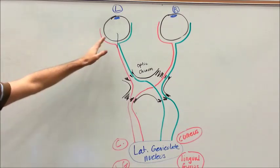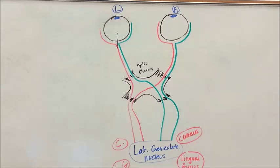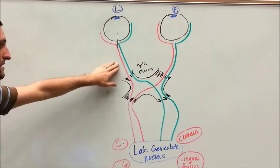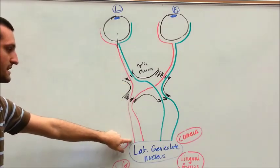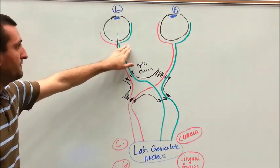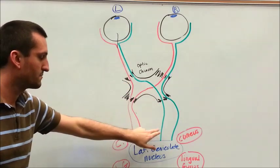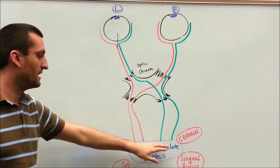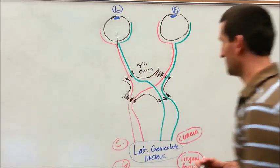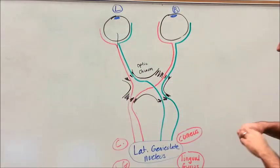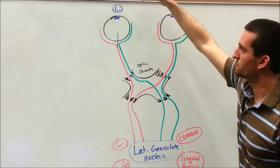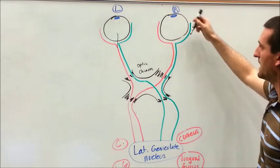Each eye is divided into the left and the right side. It's color coded so that the left side of the eye is always going to be red, and that's going to send information to the left side of the brain. The right side of the eye is going to be in green. The left side is going to send its projections across the optic chiasm to the lateral geniculate nucleus on the right side.